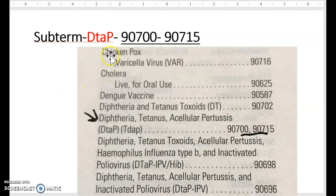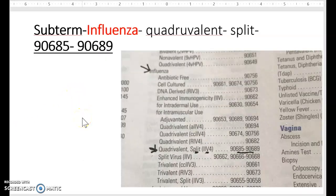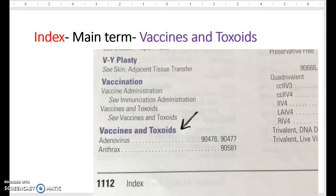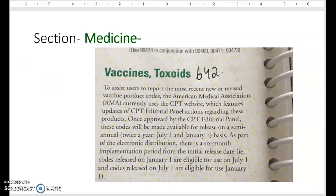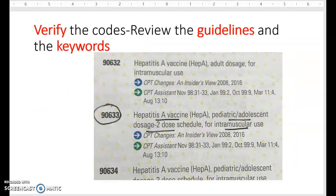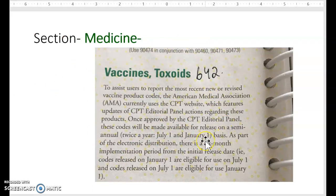We go back to our tabular section — the green pages — and look for vaccine and toxoids. We check the upper page corners for code ranges, find the ranges we noted from the index, and confirm them here. Always read the guidelines written underneath each section. You come here and match your keywords.